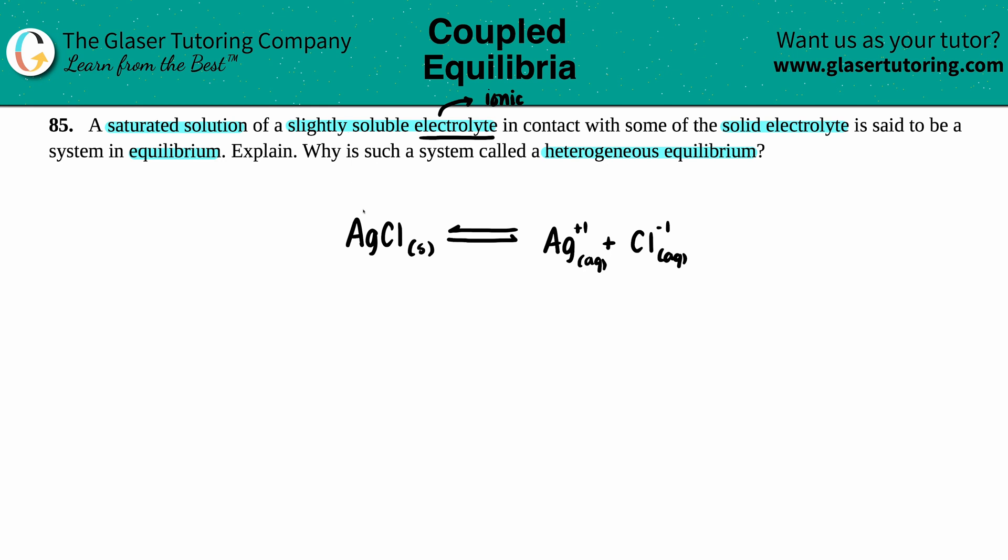This is the slightly soluble electrolyte—the ionic compound—coming in contact with some of the solid electrolyte. What does that basically mean?